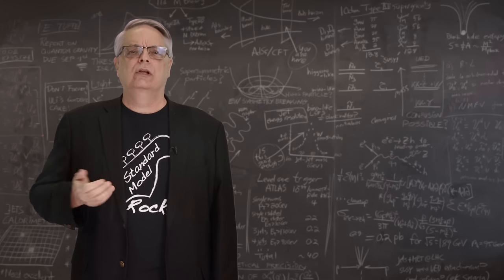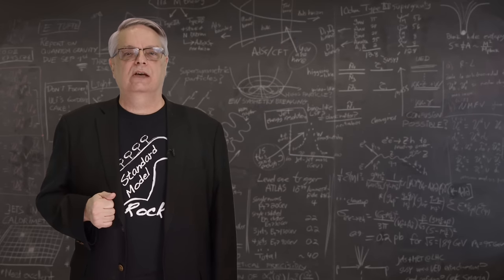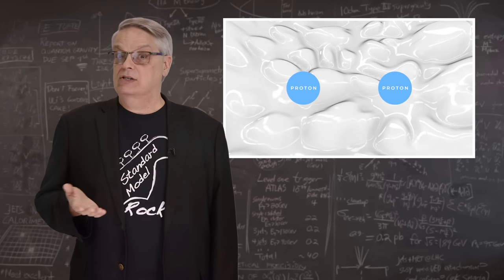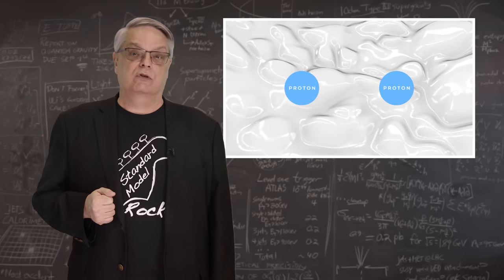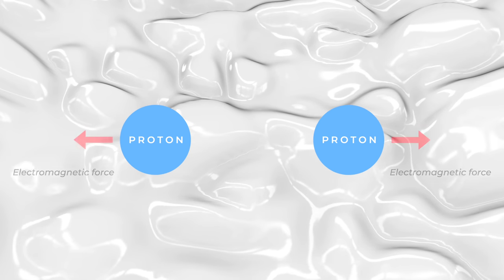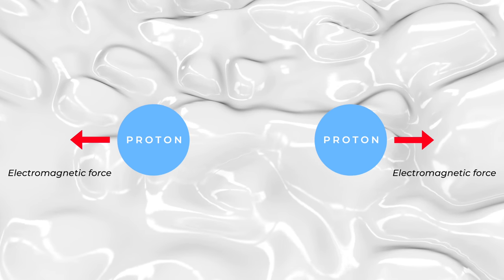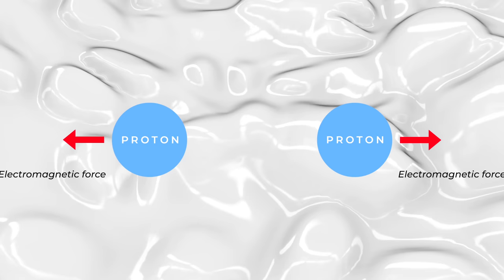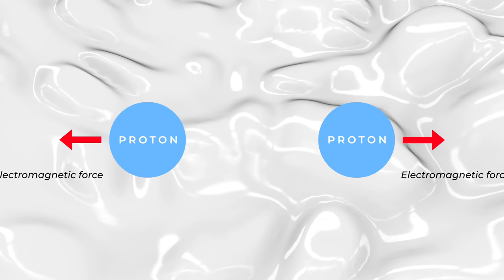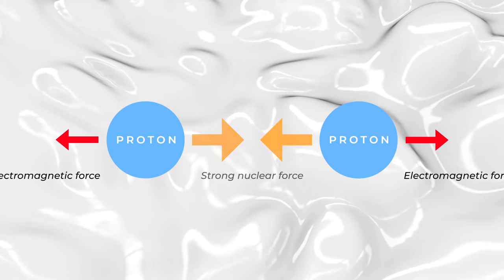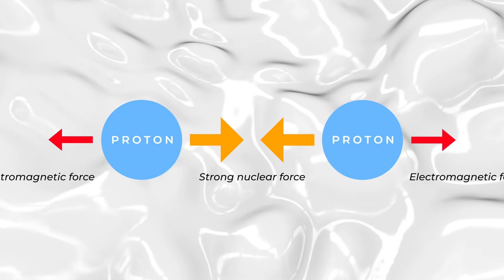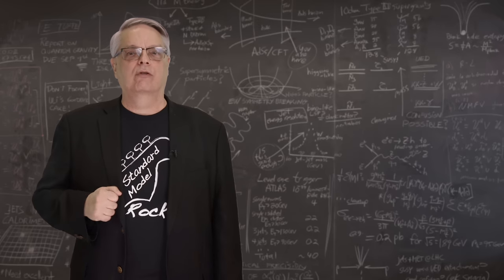The strong nuclear force holds the nucleus of atoms together. We know this because a nucleus usually contains several protons, all of which have a positive electrical charge. In electromagnetism, when you have two charges with the same sign, they push away from one another, which would blow the nucleus apart. Therefore, nuclei wouldn't exist if there wasn't a stronger force holding the nucleus together. So that's three of the four forces.